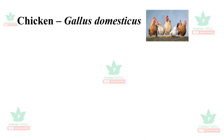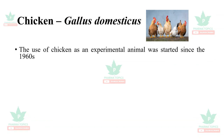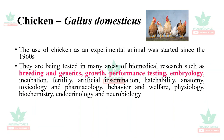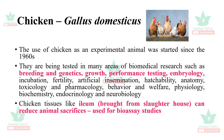Chicken, Gallus domesticus, began to be used as an experimental animal in the 1960s and are tested in many areas of biomedical research including breeding and genetics, growth performance testing, embryology, fertility, hatchability, anatomy, toxicology, pharmacology, biochemical research, endocrinology, and neurobiology. Chicken tissues like ileum, obtained from slaughterhouses, can reduce animal sacrifices and are used for bioassay studies in pharmacological research.